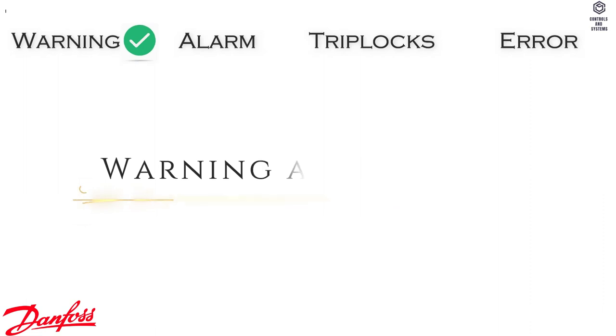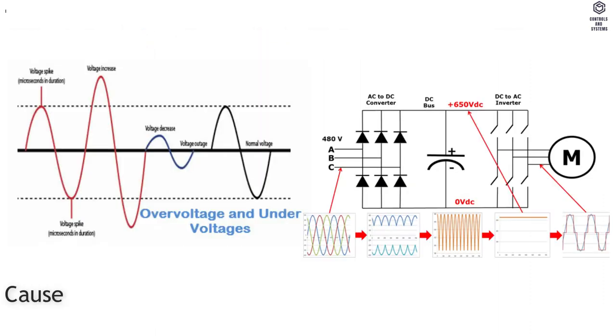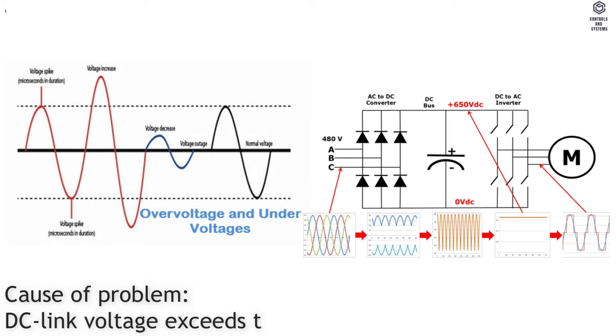Warning and Alarm 7: DC Overvoltage. Cause of Problem — DC link voltage exceeds the limit.